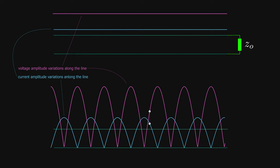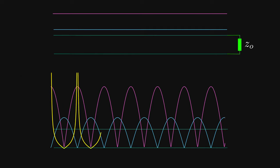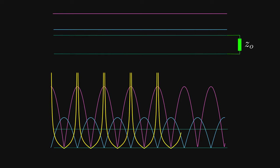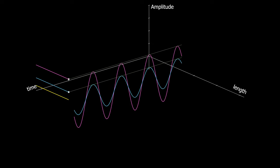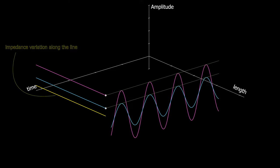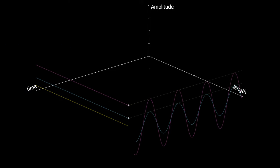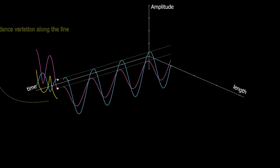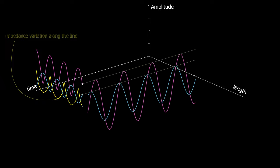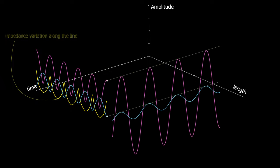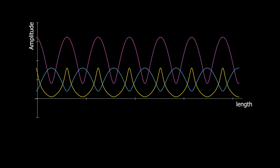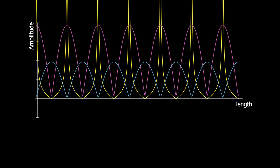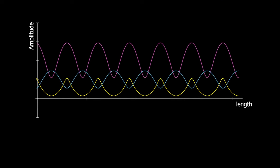At each point on the line, the amplitude of the voltage and current is different, hence the voltage over the current — the impedance measured — is different as we move along the line. This concept is known as impedance transformation. If we terminate the line with impedance equal to the characteristic impedance, the impedance measured at each point is constant. If there is a mismatch, depending on how large it is, the amplitude of the wave changes between peaks and valleys, and the impedance measured at each point changes from point to point.